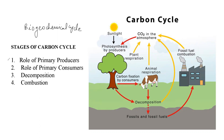There are basically four primary stages in the carbon cycle. The first stage involves the role of primary producers — the ones responsible for the production of food material, like plants. The second stage involves the role of primary consumers — the animals in the food chain that feed on plants for nutrition. The third stage involves decomposition, and the fourth stage involves combustion.